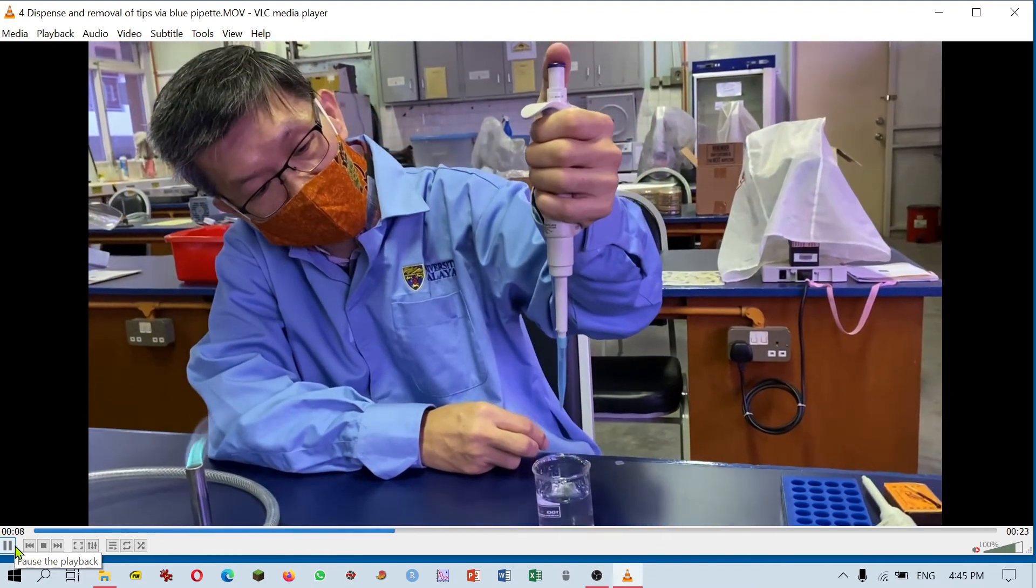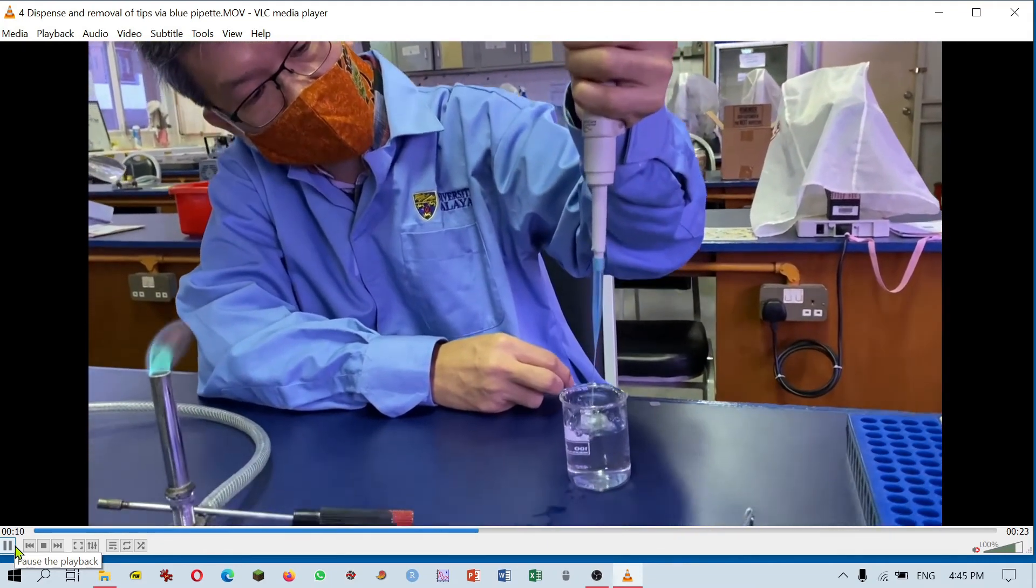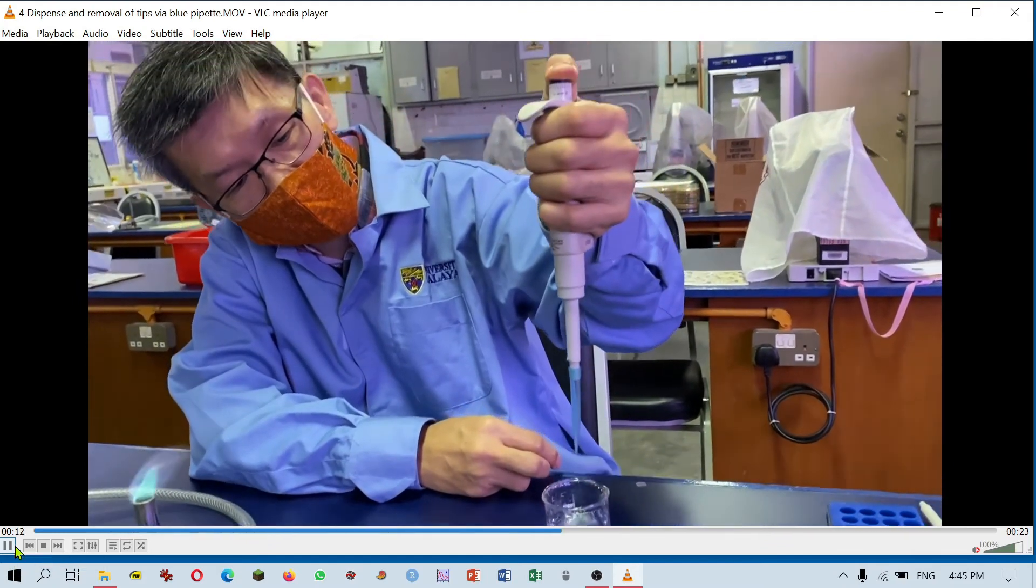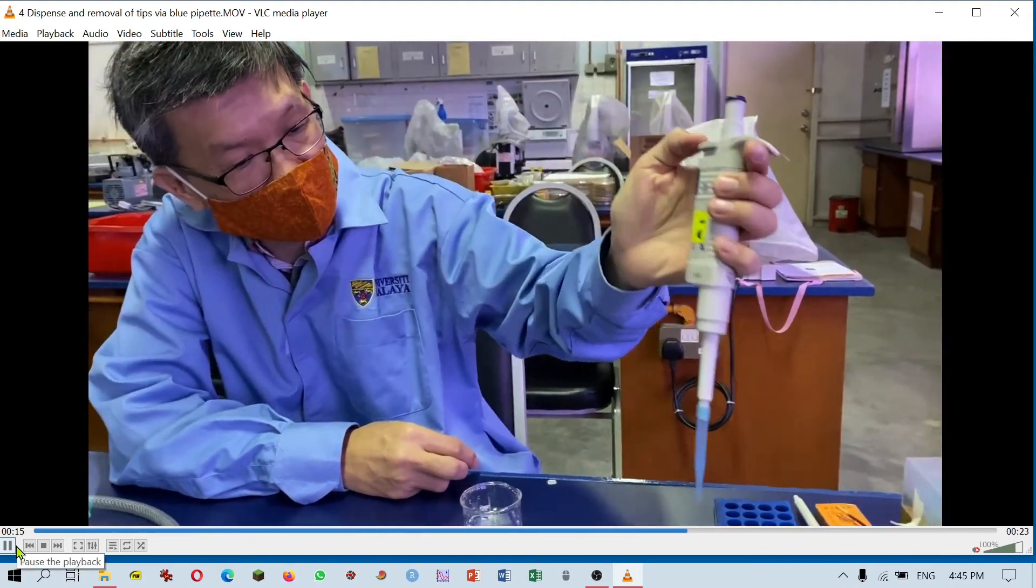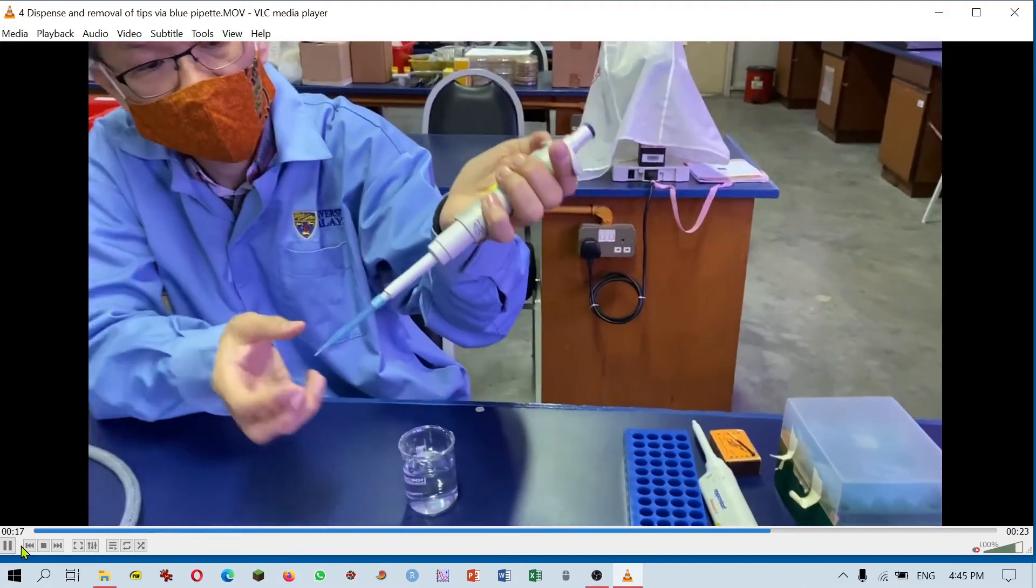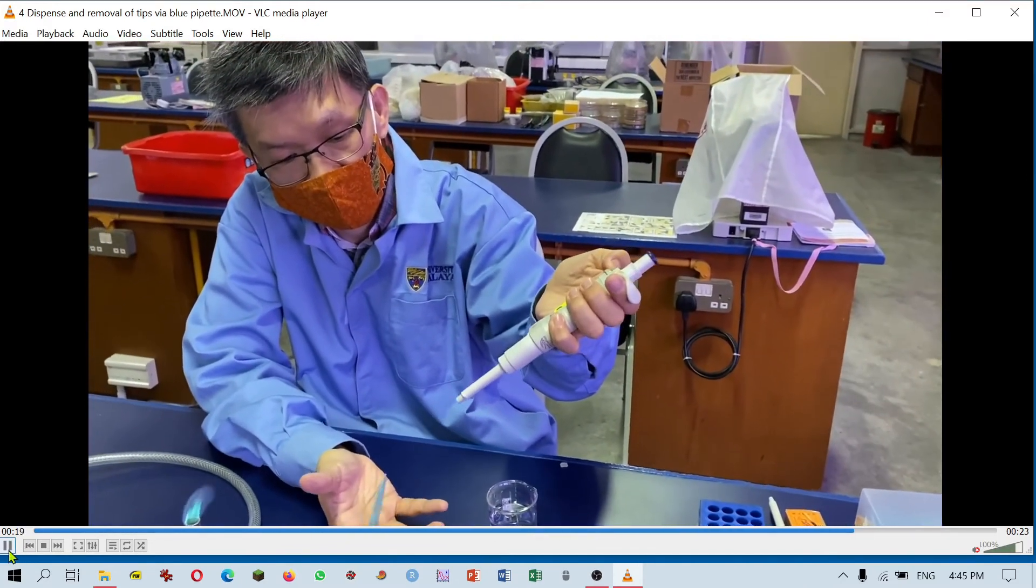To dispense, you press it all the way down to the second stop. Then press the button at the back, the ejector button at the back.